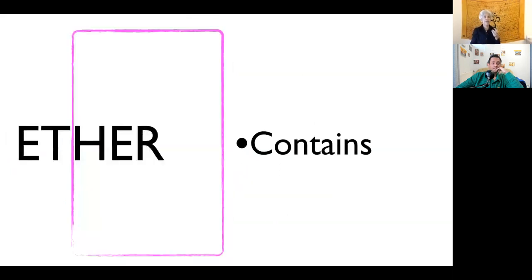In Jyotisha we have ether, which is basically akash or space. It's what contains everything else. So Jupiter is associated with space, akash. What other areas on your body do you find ether? It's the most important element.